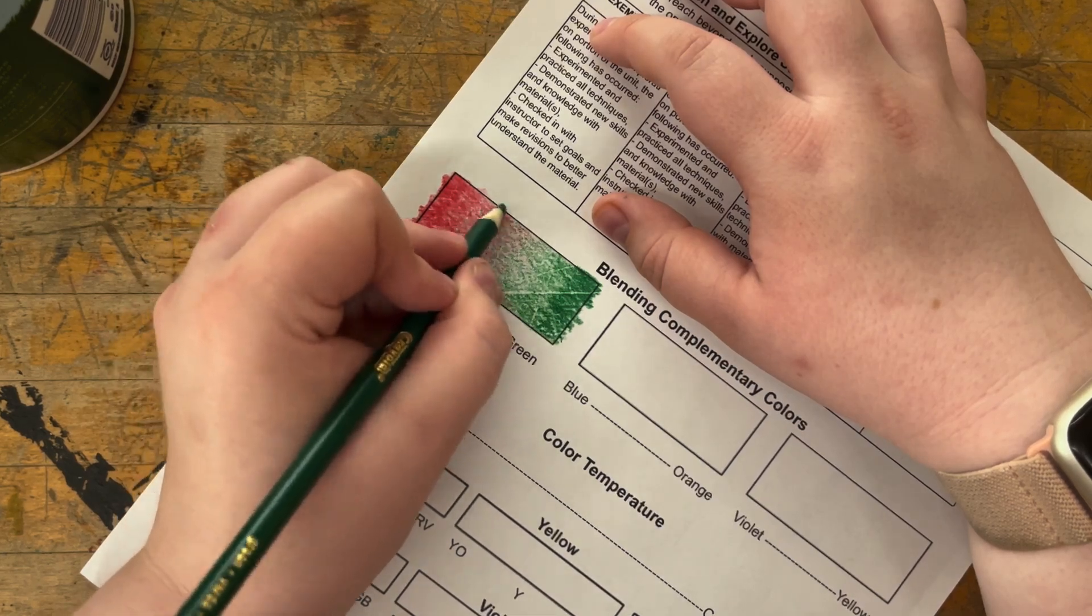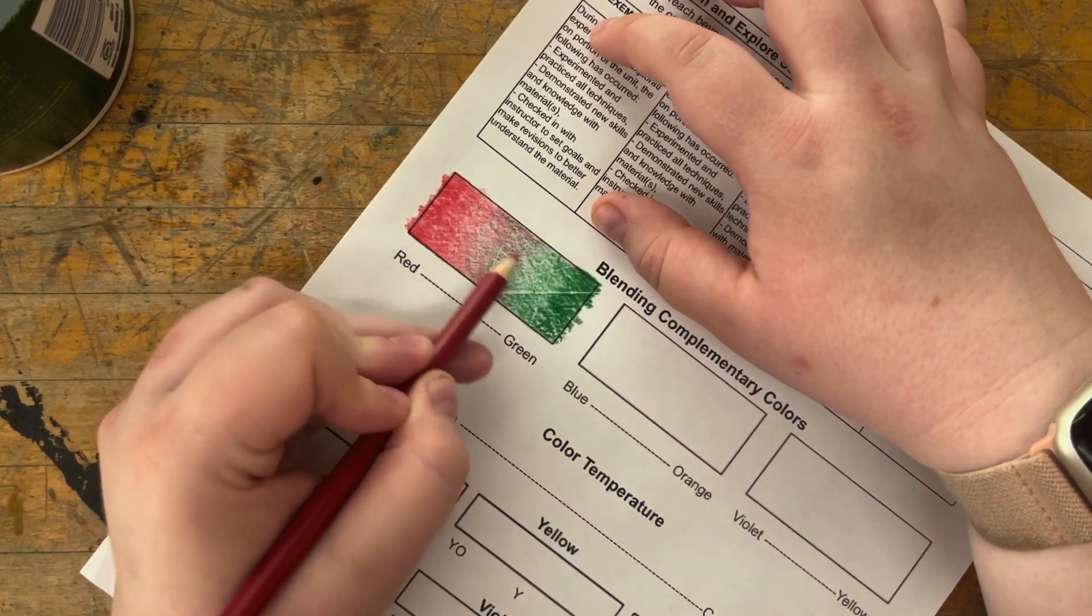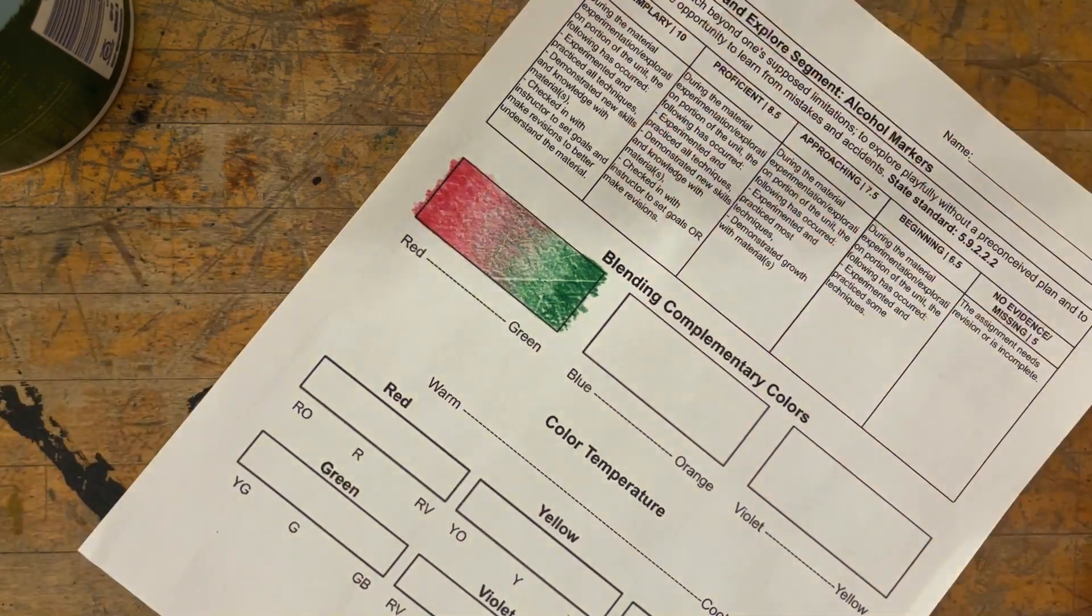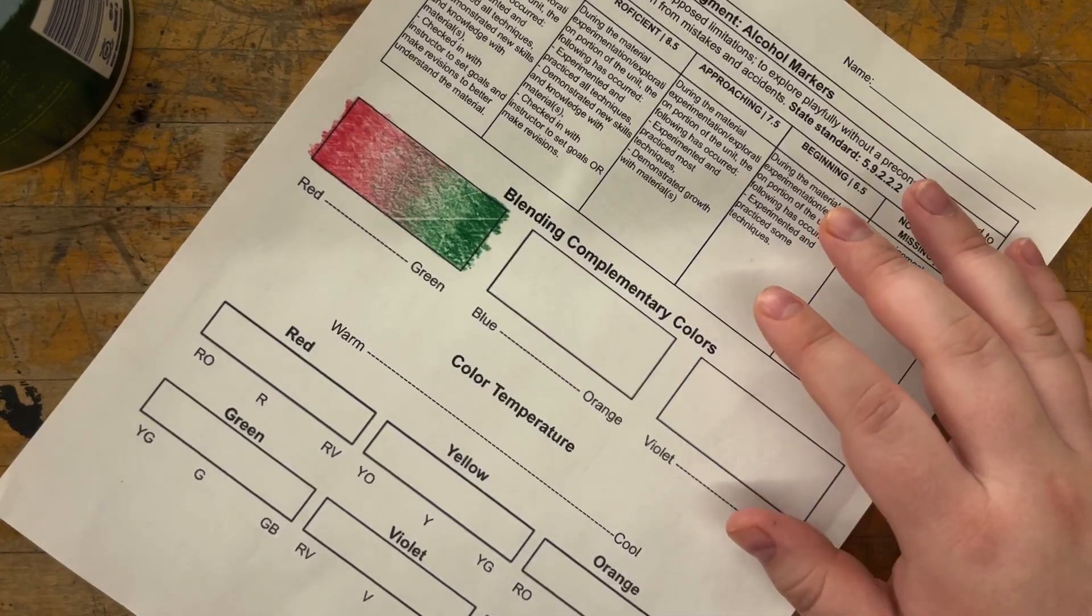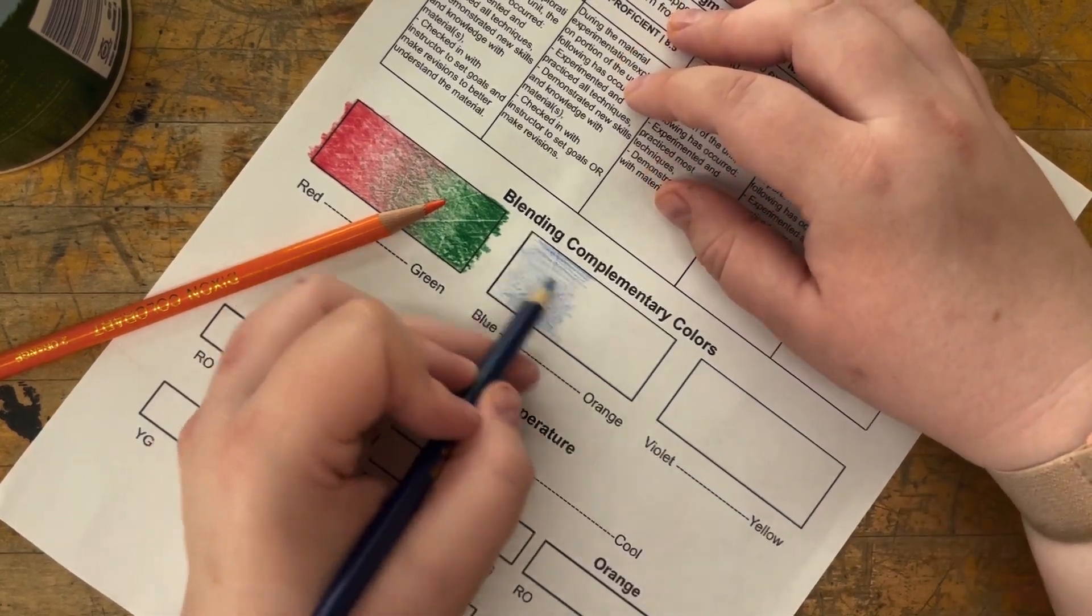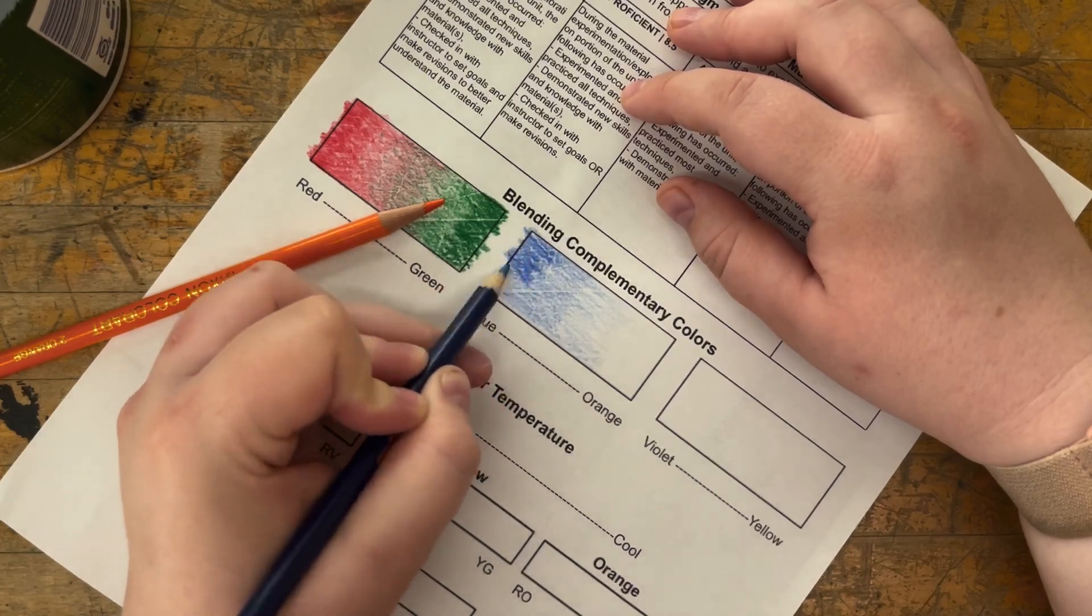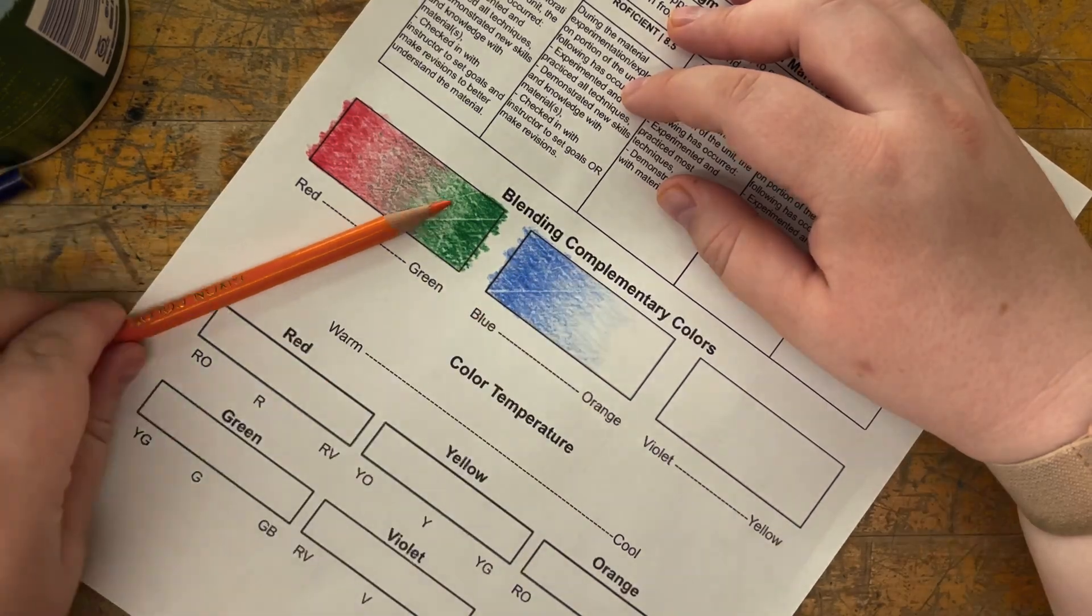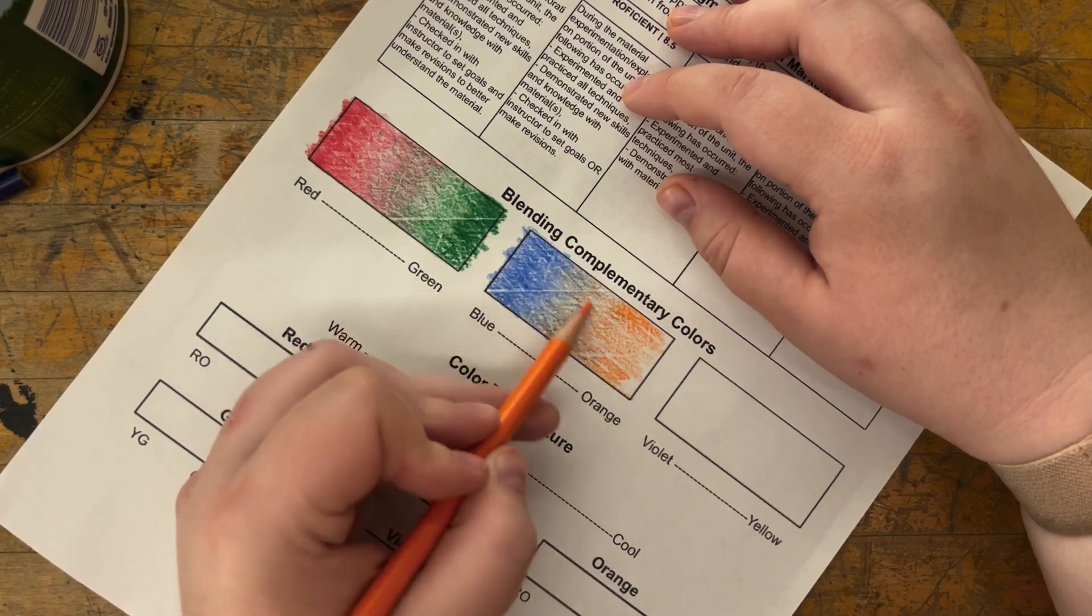Then you're going to repeat the same process with the other color, looking at green. Starting with about that mid-pressure, getting that base layer, and then alternating or gradiating your pressure from one end to the other. This is going to allow you to have more control over your blend and a smoother transition between those colors, whereas if you go in with really firm pressure right away, it's going to be harder to blend in.